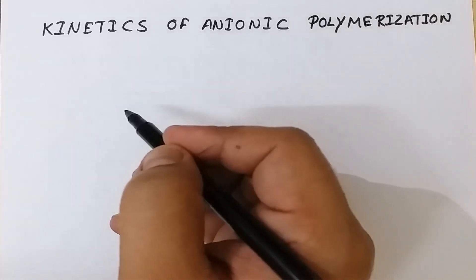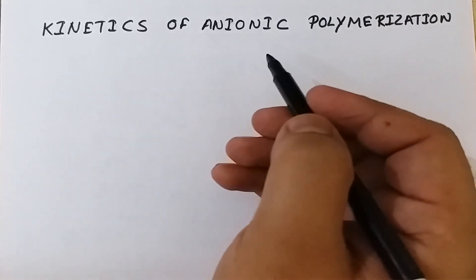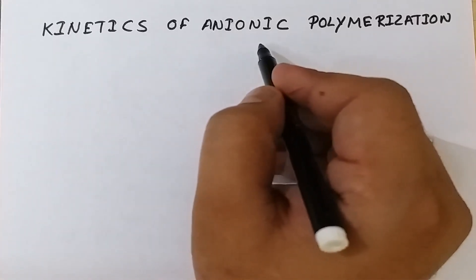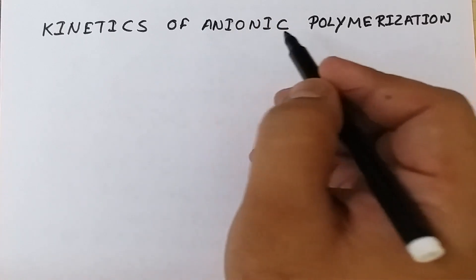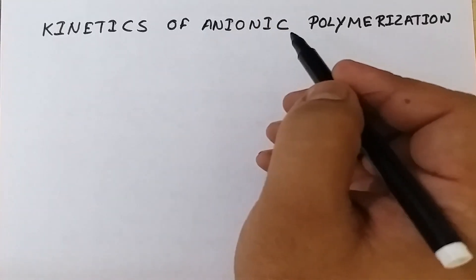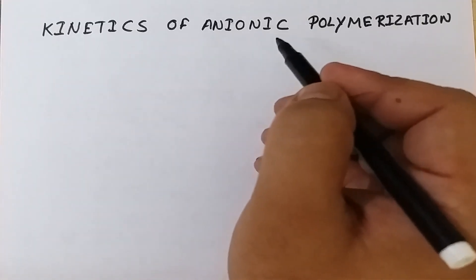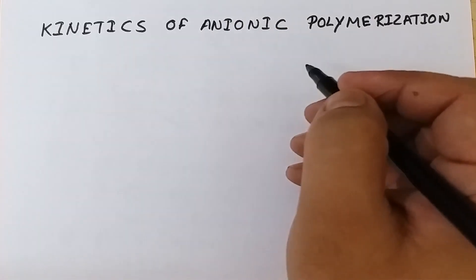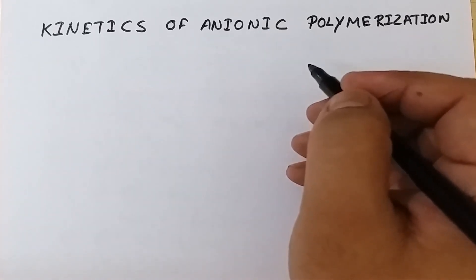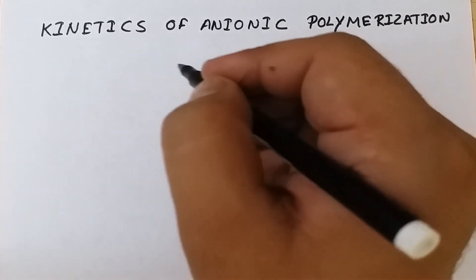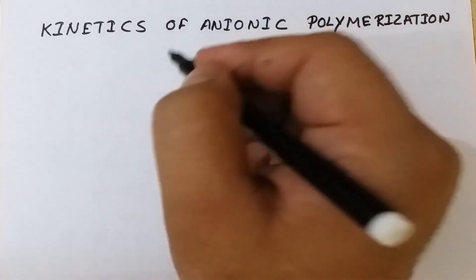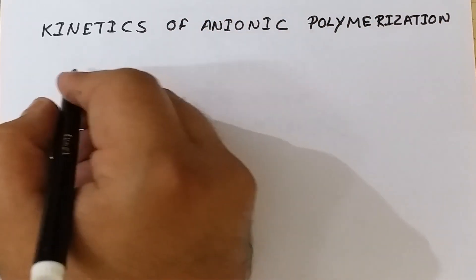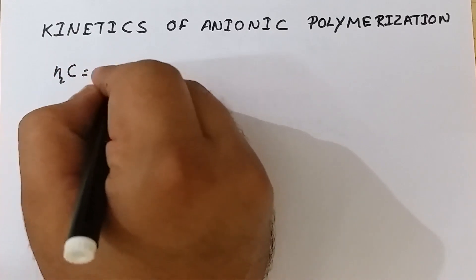Today we are going to discuss kinetics of anionic polymerization. Anionic polymerization is a class of ionic polymerization where the active centers formed are anions, or carbanions. Generally, alkali metals, organometallic compounds, and oxides of polyvalent metals are used as catalysts. These catalysts are electron donors and can provide electrons to the monomer, generating the active center on the monomer.